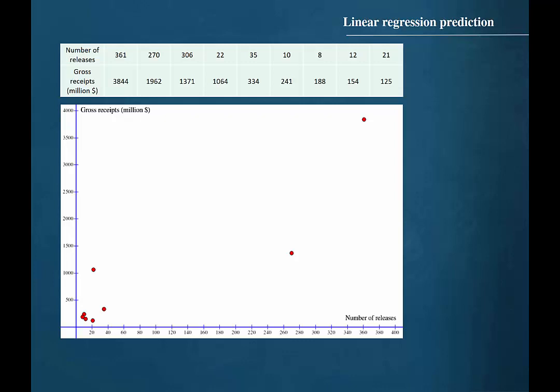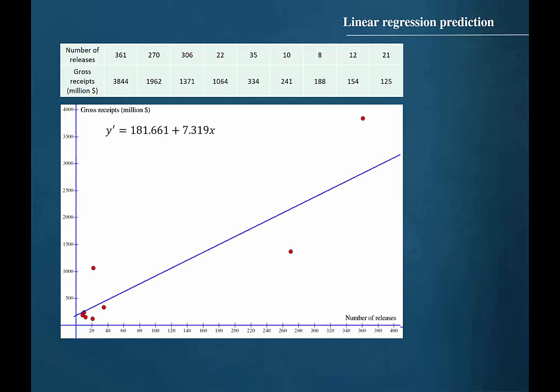We will assign number of releases as the x variable and gross receipts as the y variable. Plotting the linear regression equation y prime equals 181.661 plus 7.319x on the same set of axes shows us that there is a reasonable random scattering of the observed ordered pairs on either side of the regression line.